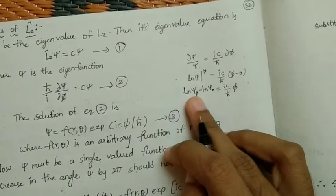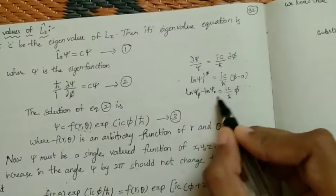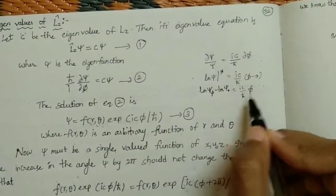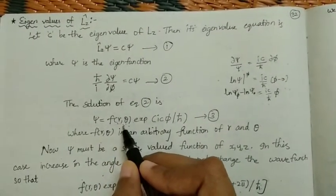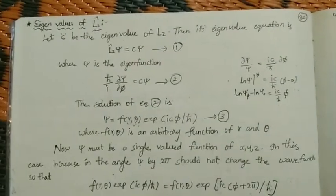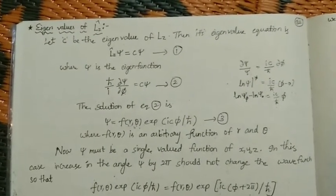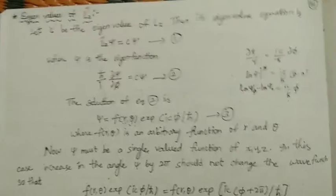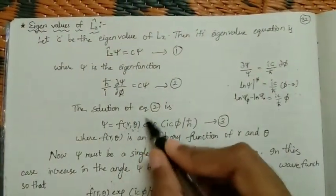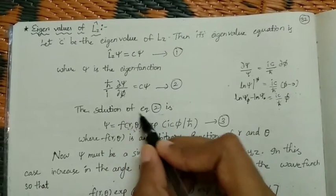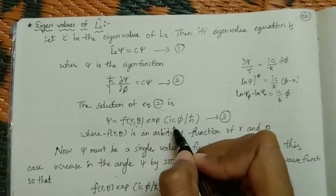Therefore xi(phi) equals xi-0 times e to the power i-C-phi over h-bar, where xi-0 is the value of the wave function when phi is 0. Since xi-0 does not depend on phi, it is a function of r and theta only. In spherical polar coordinates we have three variables r, theta, and phi, so xi-0 can be written as f(r, theta). Thus xi can be written as f(r, theta) times e to the power i-C-phi over h-bar.